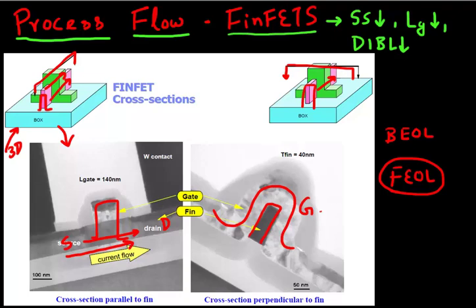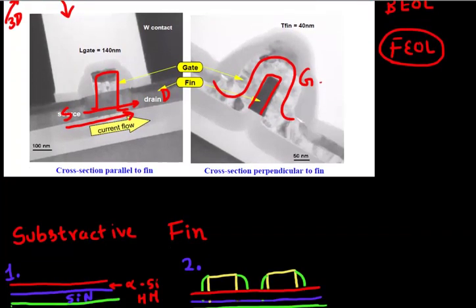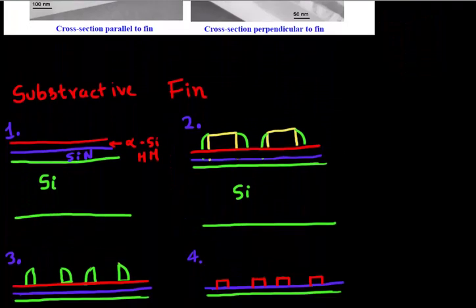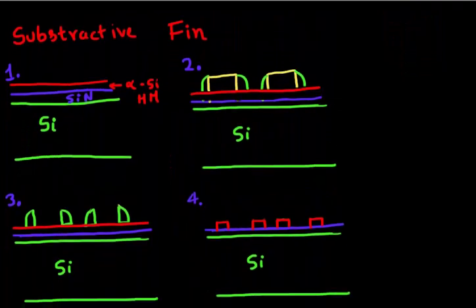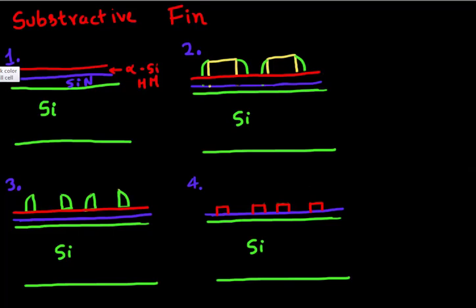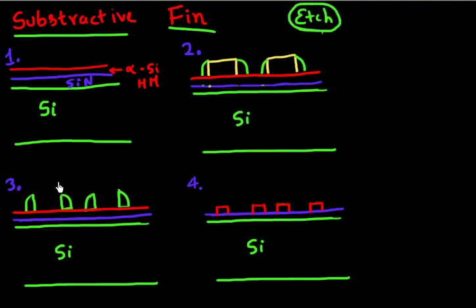So first things in making the FinFET is to form the fin itself. Let's start by looking at the different approaches we can use to make a fin for a FinFET device. The most common or most prevalent approach is to use what is called a subtractive fin — or we can also say it is to etch a fin into your silicon. Here's a sample process flow depicting how this might happen.